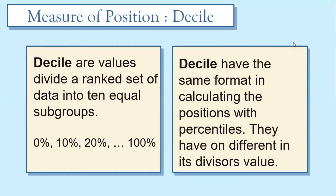Decile have the same format in calculating positions as percentile; they differ only in the divisor. You will observe the formula of decile is the same as percentile, but the divisor applied in the measure of position formula is different. In percentile, we use 100, and in decile, we use 10.